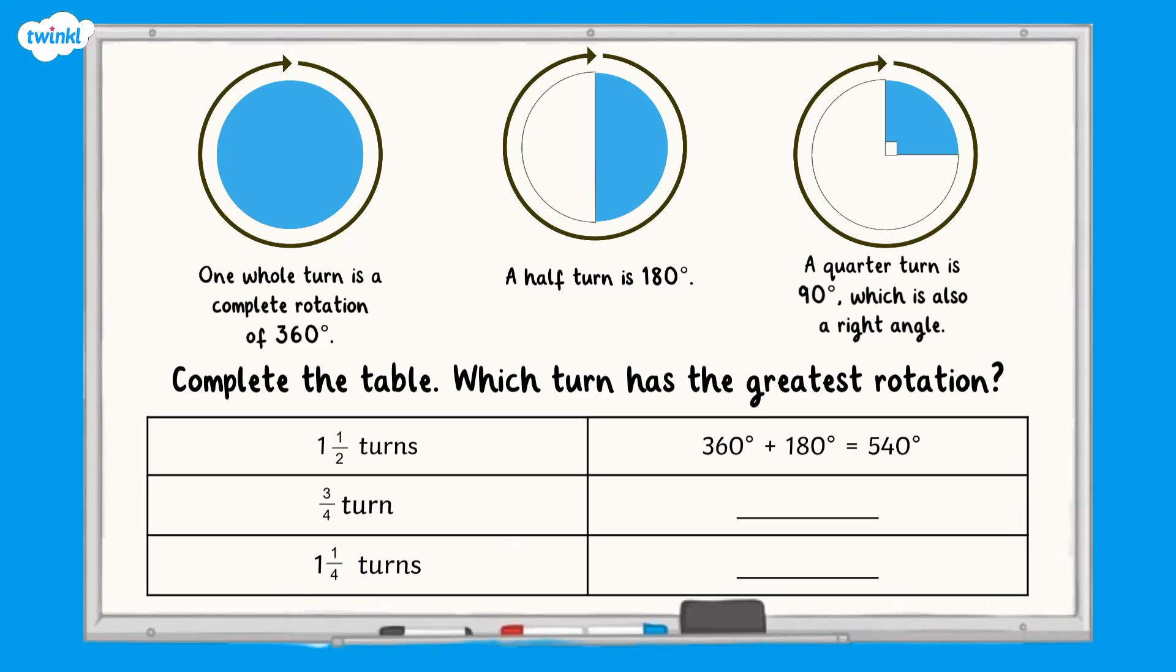Remember, you can pause the video if you need more time. Three quarters of a turn is equal to half a turn, which is 180 degrees, and a quarter of a turn, which is equal to 90 degrees. When added together, these equal 270 degrees. Three quarters of a turn is therefore equal to 270 degrees.